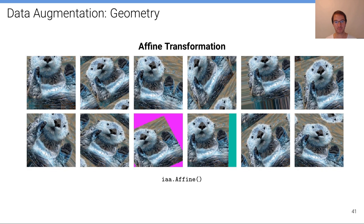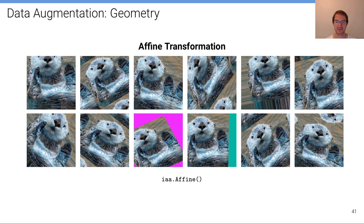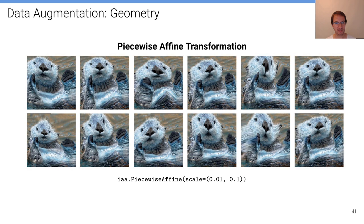Another popular augmentation strategy is applying an affine transformation to the 2D image space. You can also apply this piecewise: there is an underlying grid, and a piecewise affine transformation is applied based on it, so different regions in the images are distorted differently — it's a kind of more local warping.